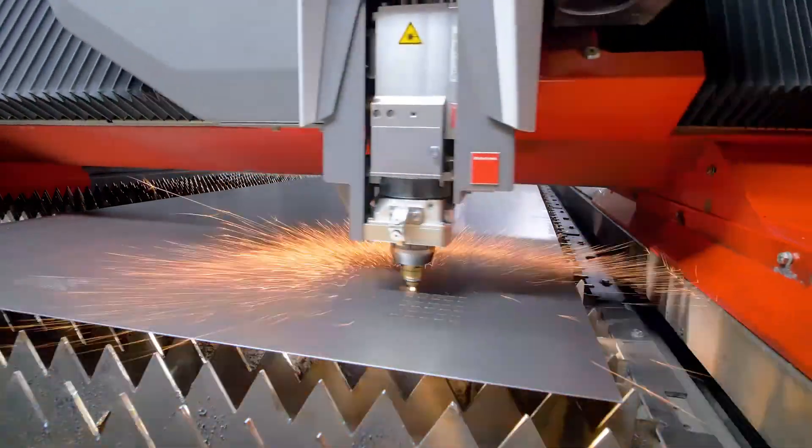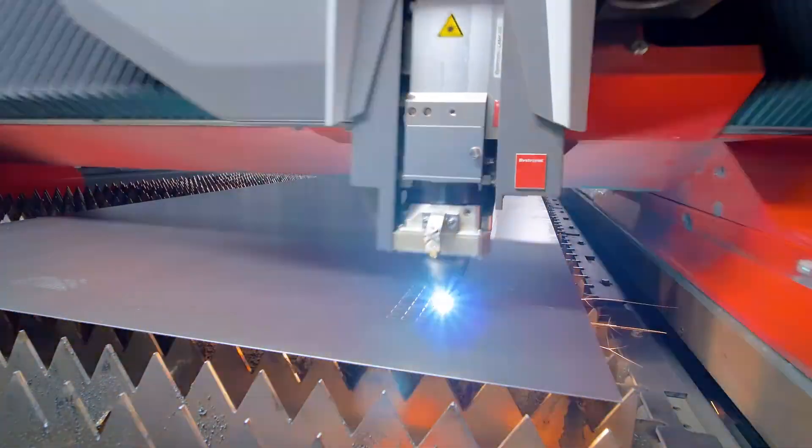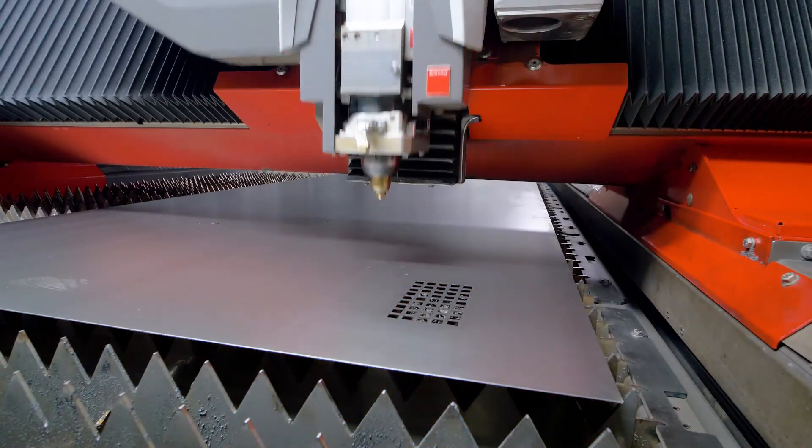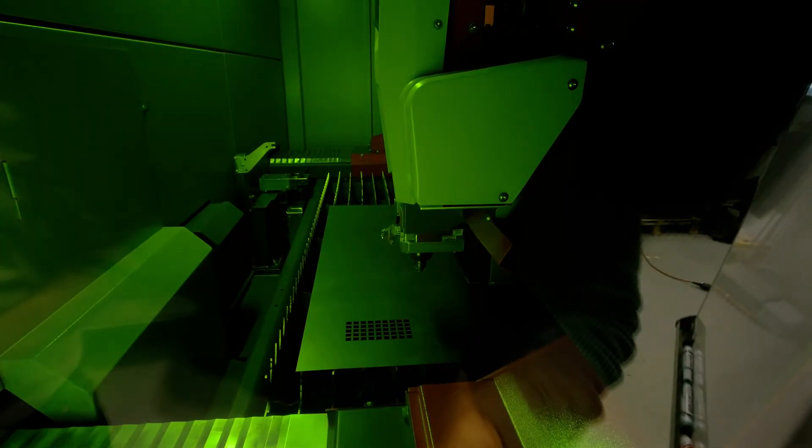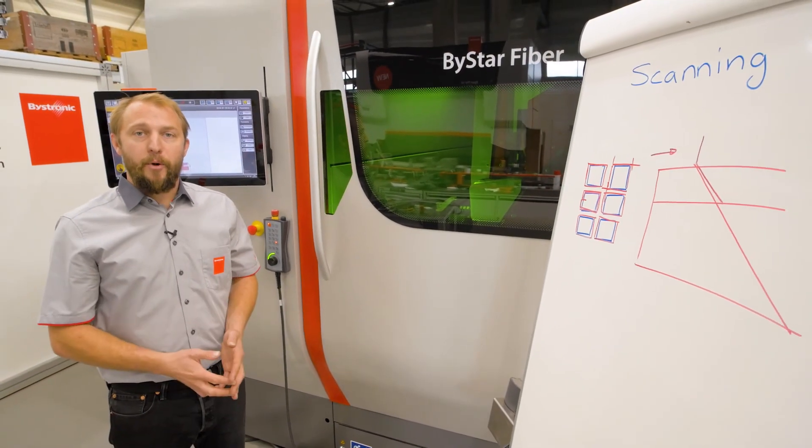So first, we are doing the vertical lines. Then we are going on the horizontal lines. As you can see, now all the parts fell out without producing any collision, having a stable and safe process.